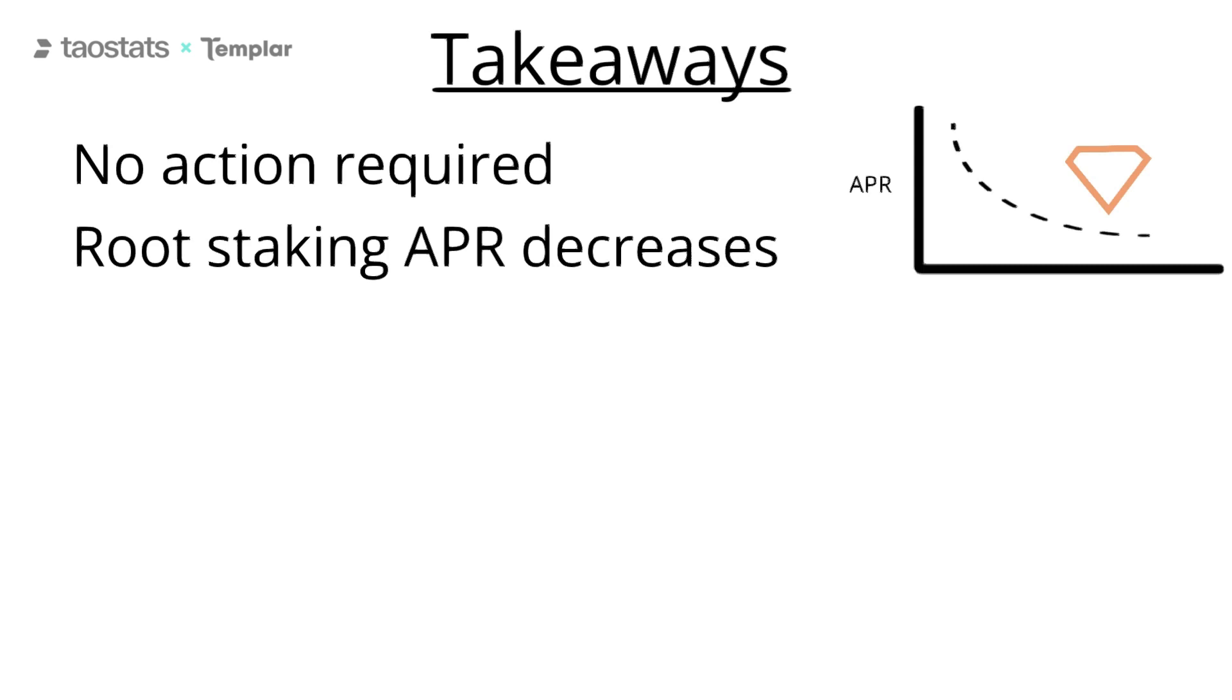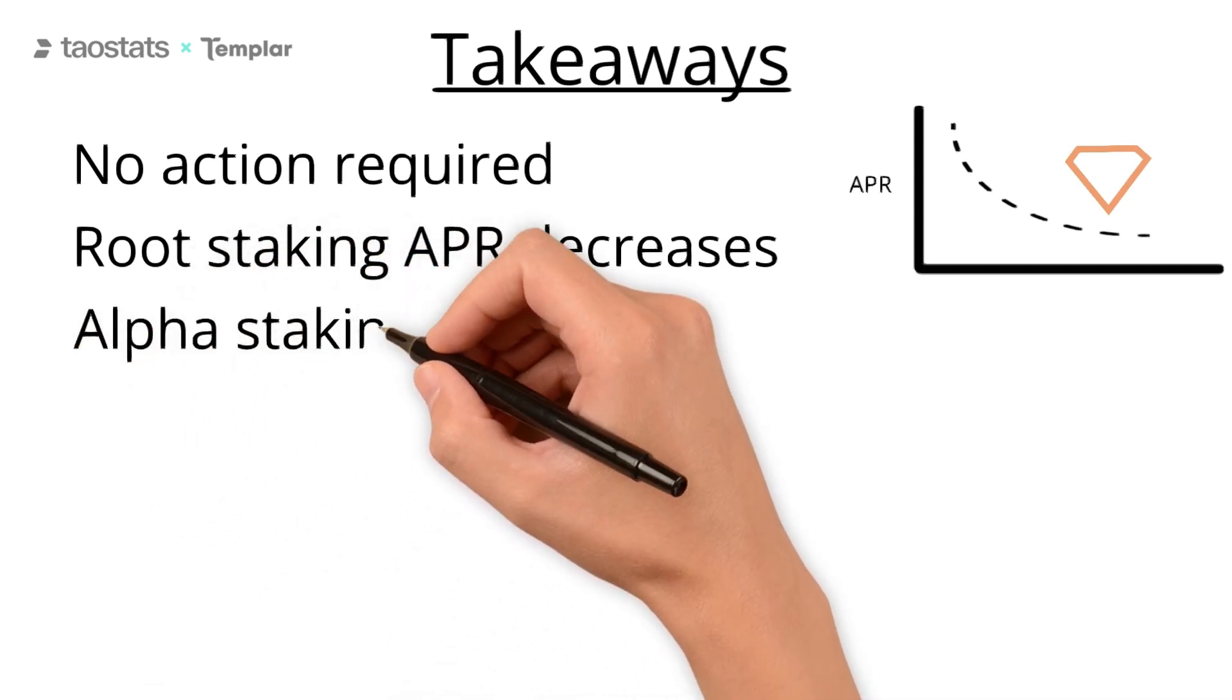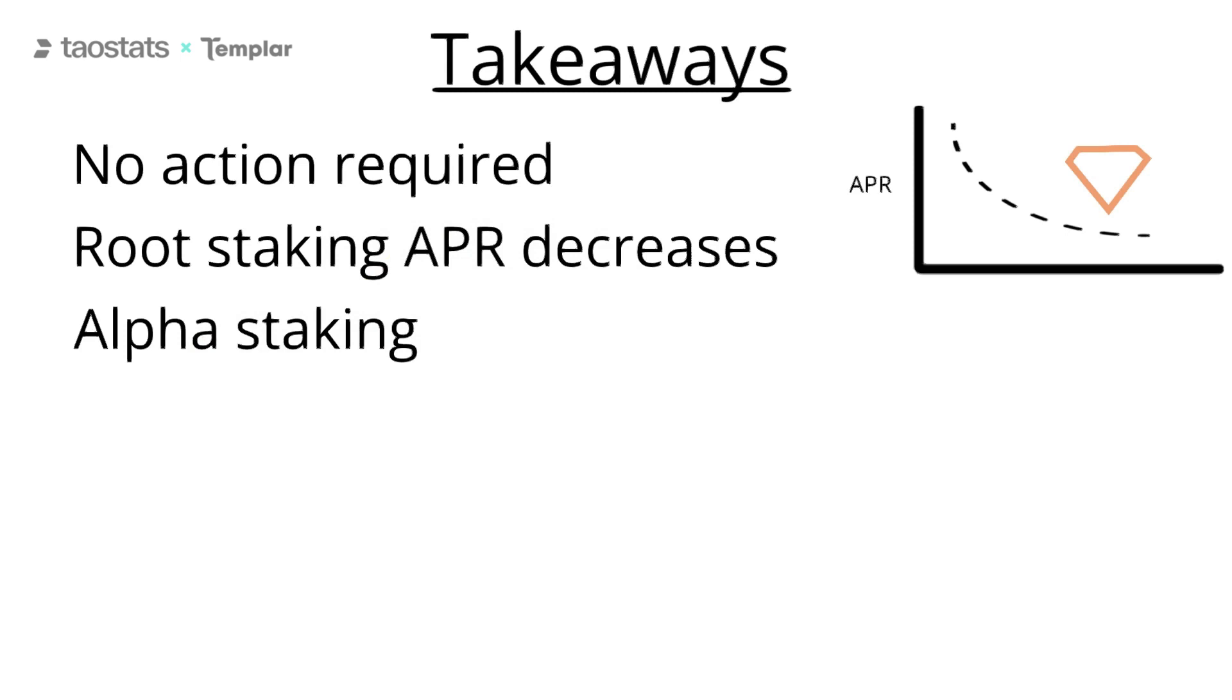Over time, you are incentivized to start to swap some of your staked Tau for alpha tokens in subnets you believe show signs of growth or value, and in return accumulate that alpha token in place of Tau. You'll be speculating that your alpha tokens will increase in value against Tau, thus making you a greater sum of Tau than had you done nothing.